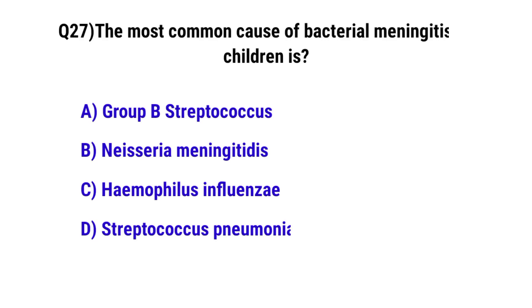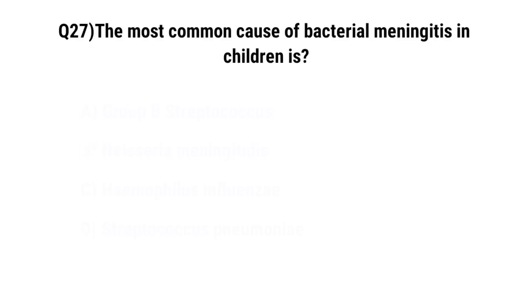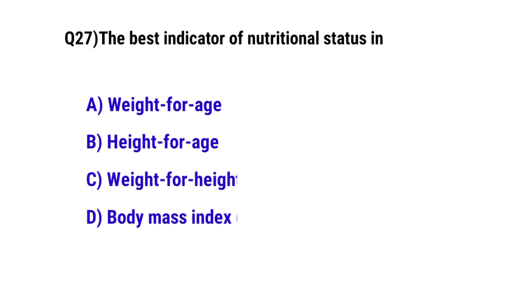Question No. 26: The most common cause of bacterial meningitis in children is — the correct option is D: Streptococcus pneumoniae.